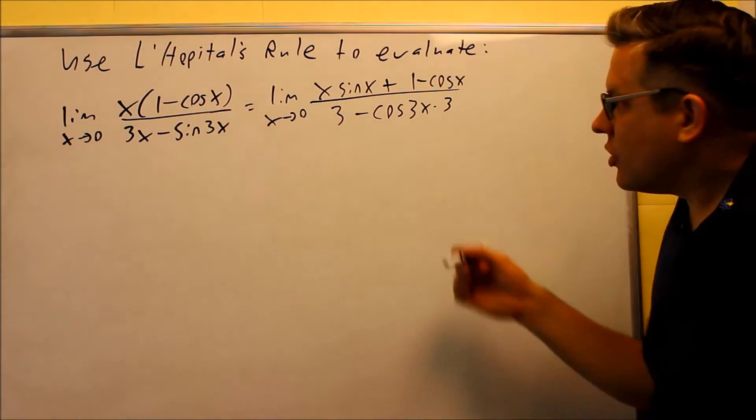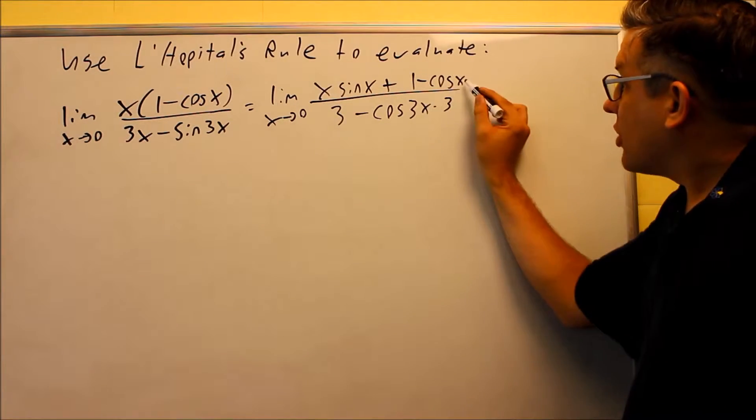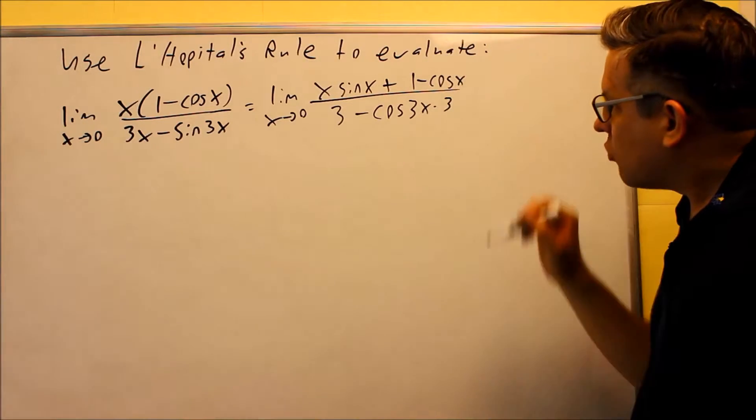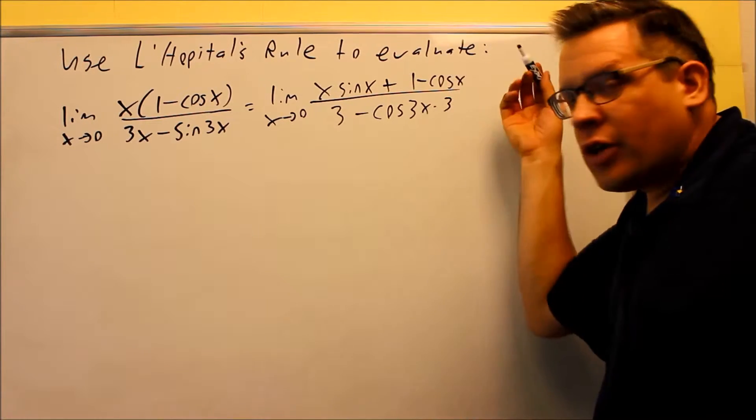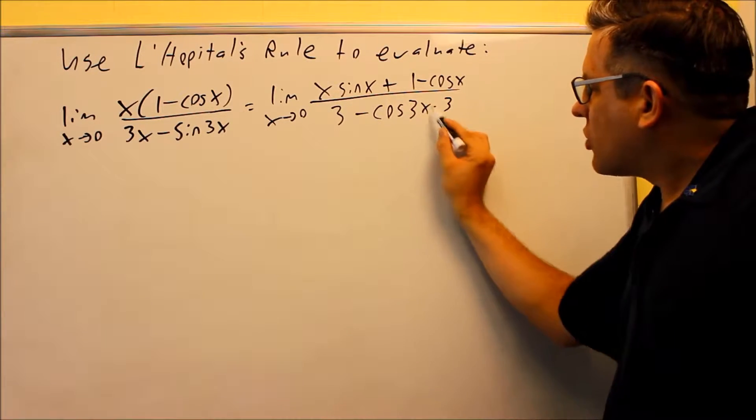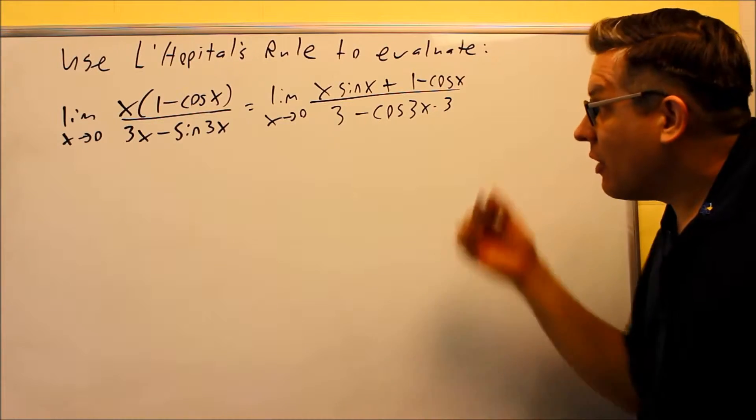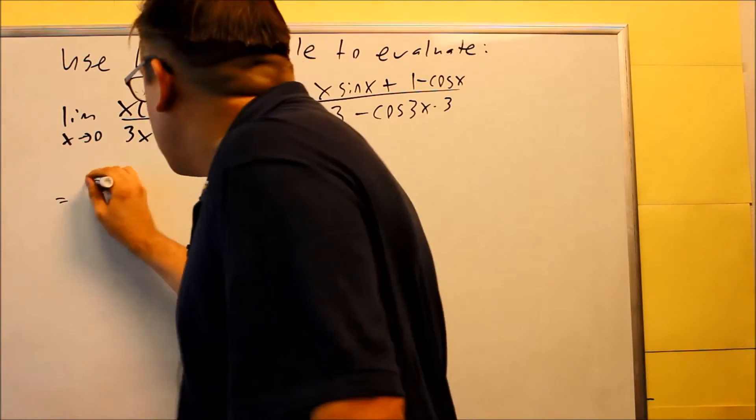Let's check it out by putting in a 0. This part's going to give you a 0 there. Cosine of 0 is 1. 1 minus 1 is 0. So, we get a 0 on the top. Now, if I put 0 in down to this piece, cosine of 0 is 1, so you get 3 minus 3. That's 0 again. So, yeah, we have to do L'Hôpital's rule another time.